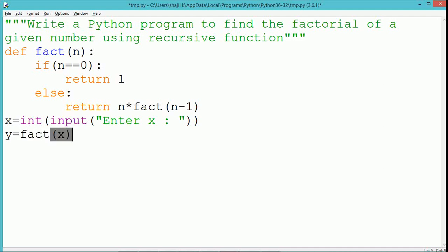For example, if we pass the value as 3, it returns n into fact of 2, and fact of 2 will be later replaced by 3 into 2 into fact of 1, and it will replace by 3 into 2 into 1 into fact of 0. That will be the factorial of 3 which is the value of 6.